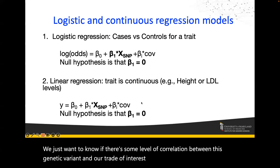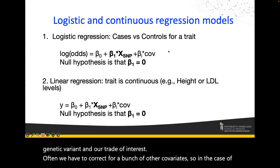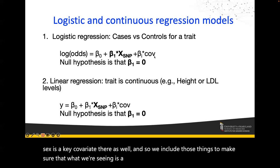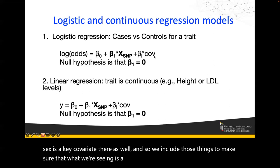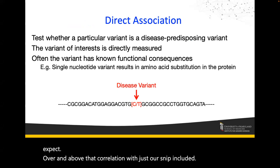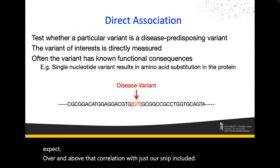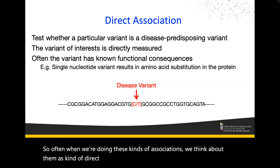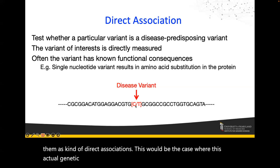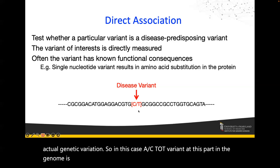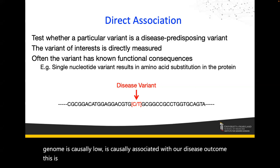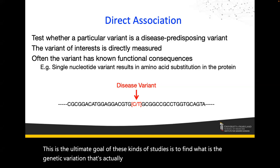Often we have to correct for a bunch of other covariates. In the case of Parkinson's disease, we need to include things like age and sex as key covariates, to make sure that what we're seeing is a correlation over and above what we'd expect from those factors alone. When we do these kinds of associations, we often think about them as direct associations — where the actual genetic variation, say a C-to-T variant at a particular point in the genome, is causally associated with our disease outcome. This is the ultimate goal: to find the genetic variation that's actually causing or increasing risk for a particular disease.